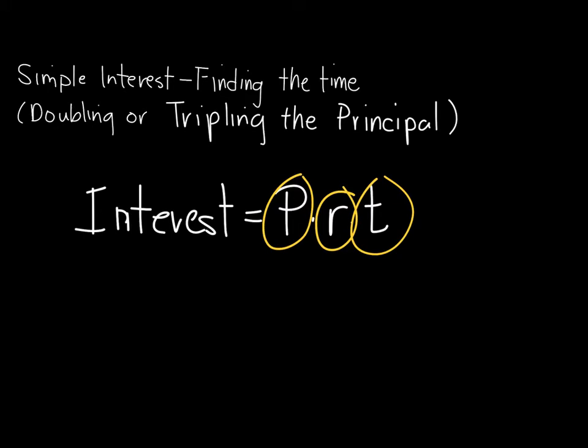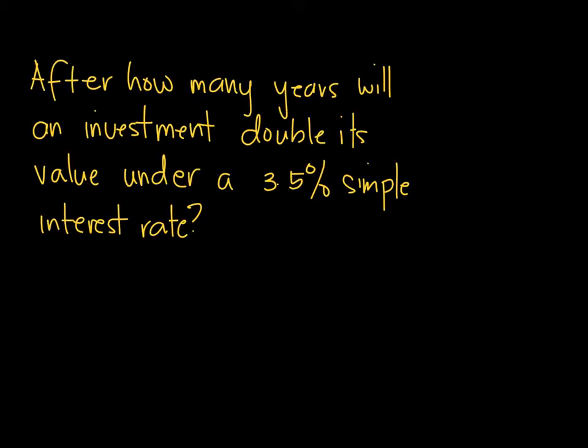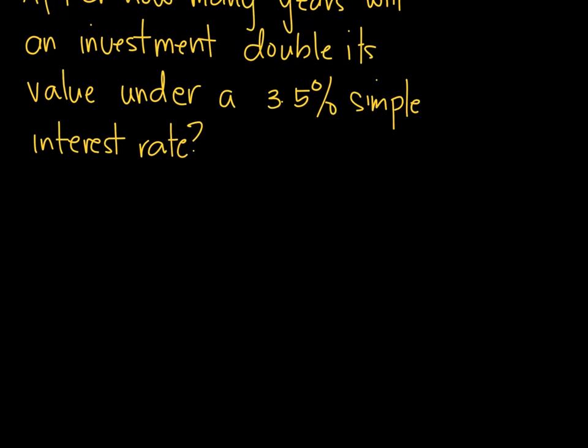So let's take for example, the problem here is after how many years will an investment double its value under a 3.5% simple interest rate. So it's clear that what is missing is the time. Interest is equal to P, R, and then T.